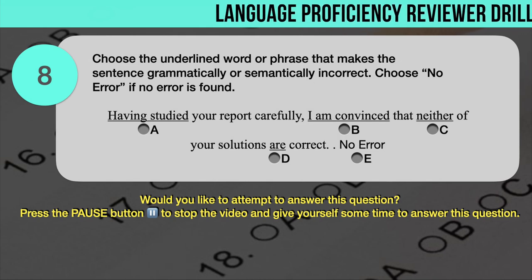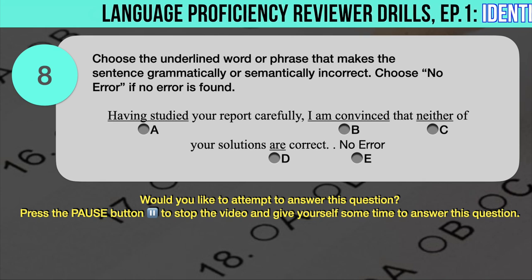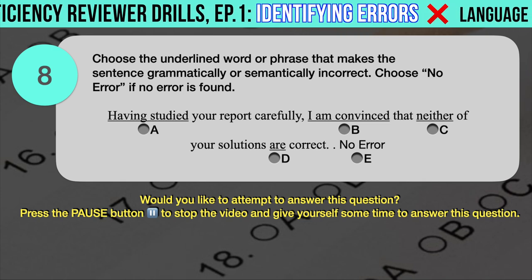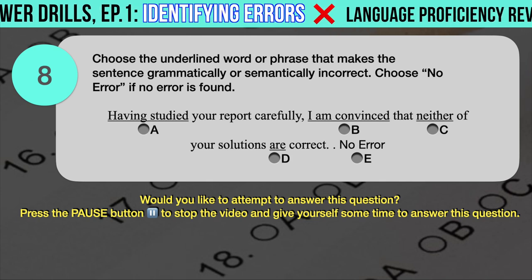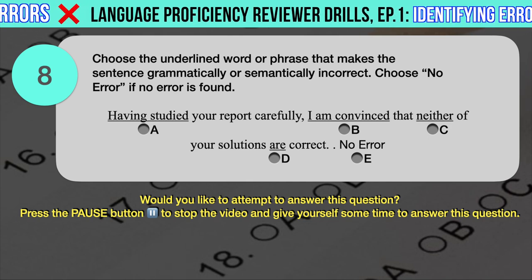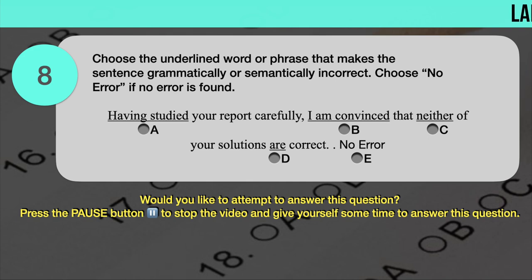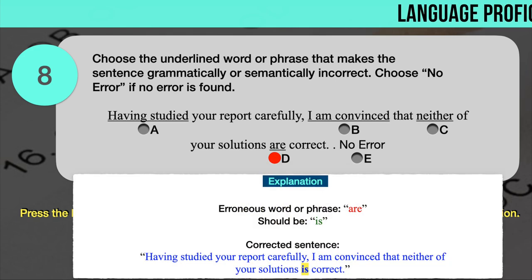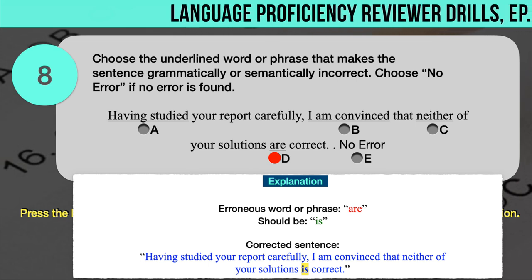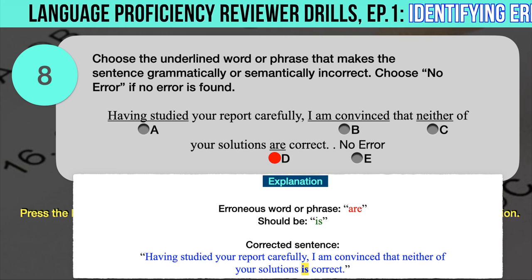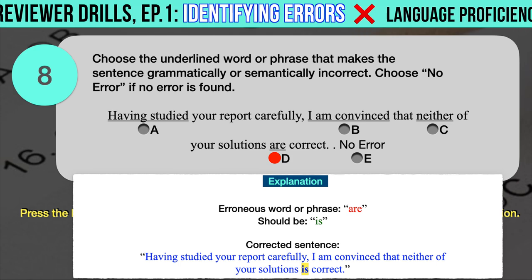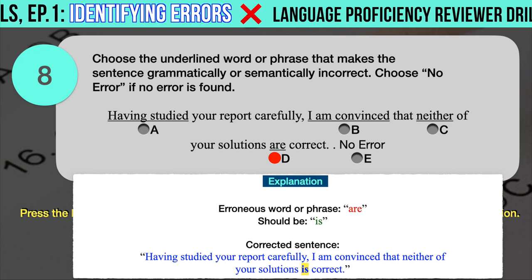Drill question number 8. Choose the underlined word or phrase that makes the sentence grammatically or semantically incorrect. 'Having studied your report carefully, I am convinced that neither of your solutions are correct.' The underlined words are: A. Having studied, B. I am convinced, C. Neither, D. Are. The correct answer is D. The erroneous word is 'are' — it should have been 'is.' The word 'neither' implies two solutions, but only one is the subject at a time; therefore the correct verb form is 'is.' Correct sentence: Having studied your report carefully, I am convinced that neither of your solutions is correct.